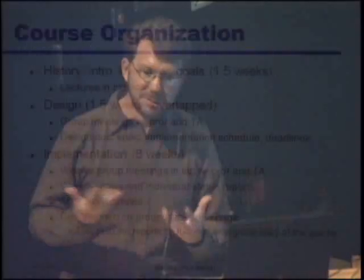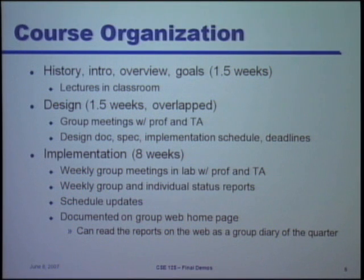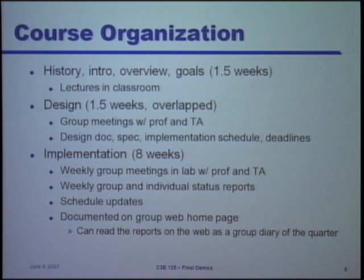So how does this course work? We start with a little bit of history, introduction, overview, and goals in the first week and a half. Then the students get jump-started on the design of the game they want to build. We have some group meetings where we interact on the design, the features, the story, and the idea behind the game. The students write a design document, some specifications, an implementation schedule, and a set of milestones. Then the bulk of the quarter is spent on implementation. Each group has a weekly group meeting with me and the teaching assistant, and the students write group and individual status reports talking about what they accomplished, what they were supposed to accomplish, what was left, and why they didn't accomplish it. We go over problems, troubleshoot, and talk about what we need to achieve in the following week. All of these status reports are documented on the web on the group web pages.